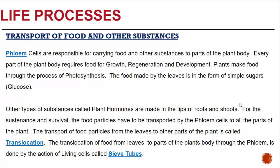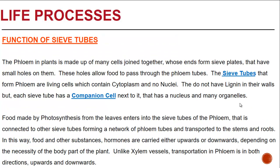The translocation or movement of food from leaves to parts of the plant's body through the phloem is done by the action of living cells called sieve tubes. The phloem in plants is made up of many cells joined together whose ends form sieve plates that have small holes on them. These holes allow food to pass through the phloem tubes.